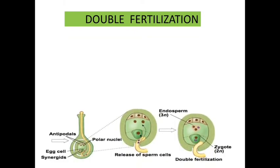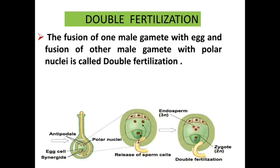Double fertilization means: the fusion of one male gamete with the egg cell, and the fusion of the other male gamete with the polar nuclei, together is called double fertilization. The diagram also shows how double fertilization occurs in flowering plants.